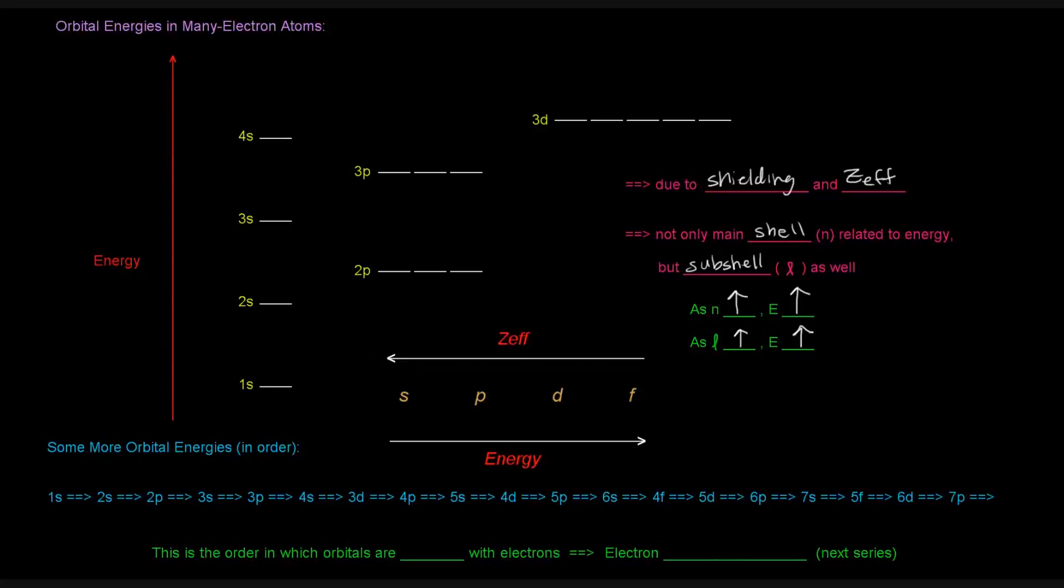So now you'll notice here that I didn't really put all of the orbitals in this energy diagram. So the others are kind of listed here. We go from 1s to 2s, then there's 2p, then there's 3s, then there's 3p, then there's 4s, and then there's 3d. And then what happens after that?